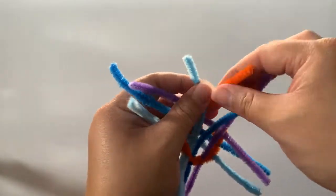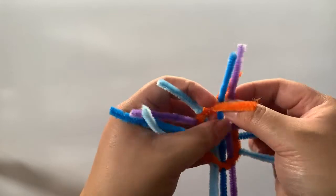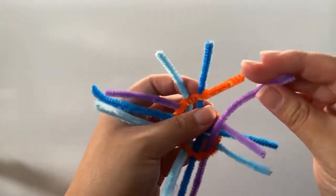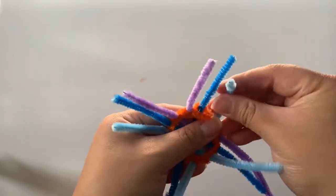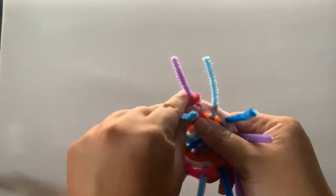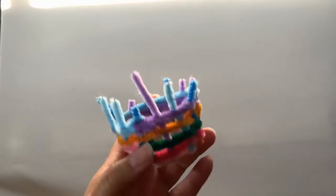To get the shape you want with this method of weaving all you need to do is bend and manipulate the pipe cleaners in the direction you desire. Before moving along too far you can adjust the spacing between your pipe cleaners to make sure you're getting an even weaving.